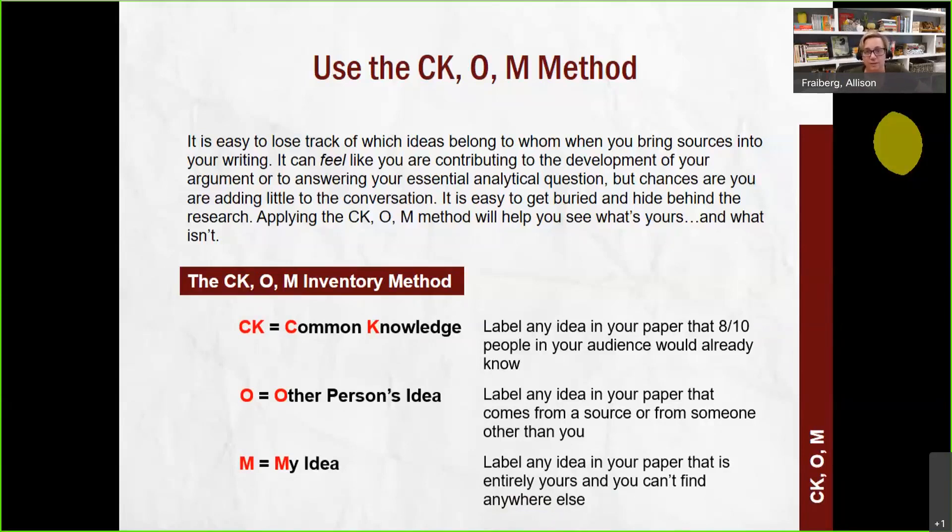Now, what this exercise asks you to do is go through your entire paper, if it's an analytical paper, go through your entire paper and label each sentence. Is it common knowledge? Is it another person's idea? Is it my idea? And if you go through and do this, a couple of things are going to happen. You may notice, for example, that there is an O, another person's idea that you probably thought was yours or that you didn't cite. So it's a good chance to just review who's talking.